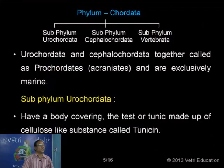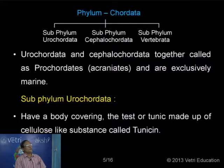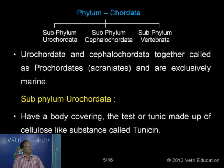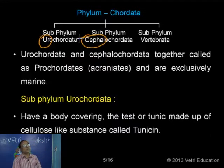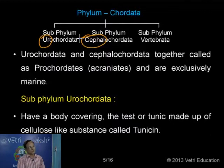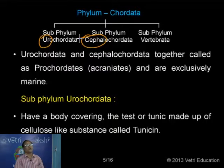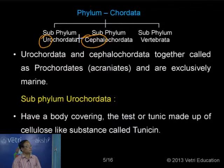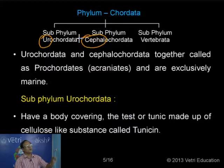Here is the classification of chordates. We can classify all chordates, which have the three important characteristics, into three different subphyla. One: Urochordata. Another one: Cephalochordata. The third one: Vertebrata. In the case of Urochordata and Cephalochordata, both are exclusively marine. But in the case of Vertebrata, they have the backbone in the form of a vertebral column. That is why we are grouping the first two categories together as Protochordata.